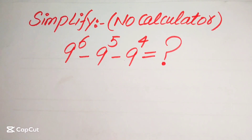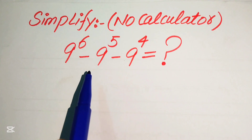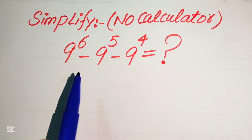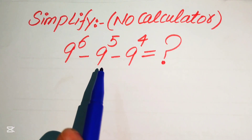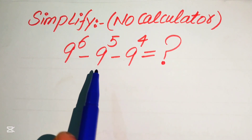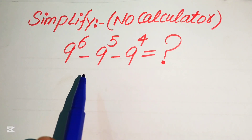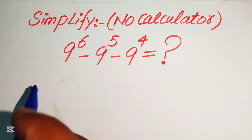Hello everyone. How to simplify this nice algebraic expression: 9 to the power of 6, minus 9 to the power of 5, minus 9 to the power of 4. We will write this algebraic expression in simplified form. Note that the calculator is not allowed in this problem, so we will show all of the working on paper.